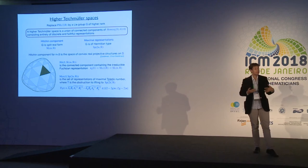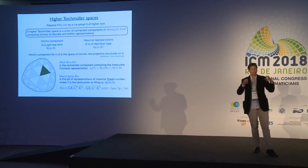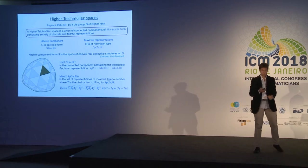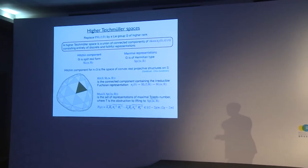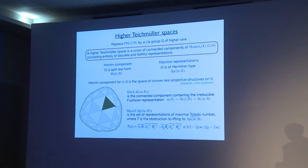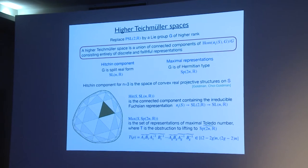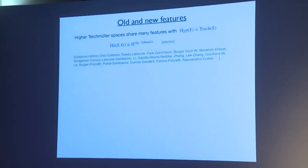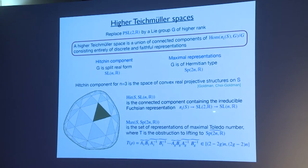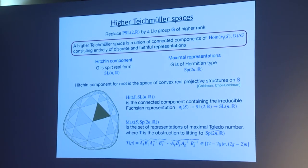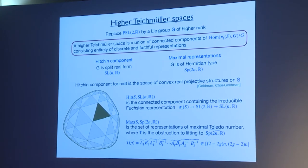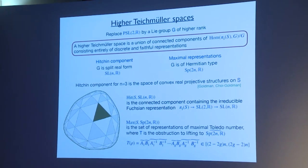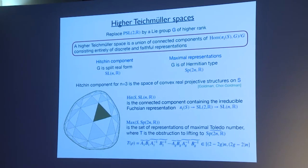Claiming these are higher Teichmüller spaces hides some results: every Hitchin component representation is discrete and faithful — proved by Labourie and independently by Fock and Goncharov — and every maximal representation is a discrete embedding, a result of Marc Burger, Alessandra Iozzi, and myself. What I want to show is that these higher Teichmüller spaces share many properties with classical Teichmüller space. Hitchin's 1992 theorem, using Higgs bundle methods, showed the Hitchin component is homeomorphic to a vector space — one key property of classical Teichmüller space.